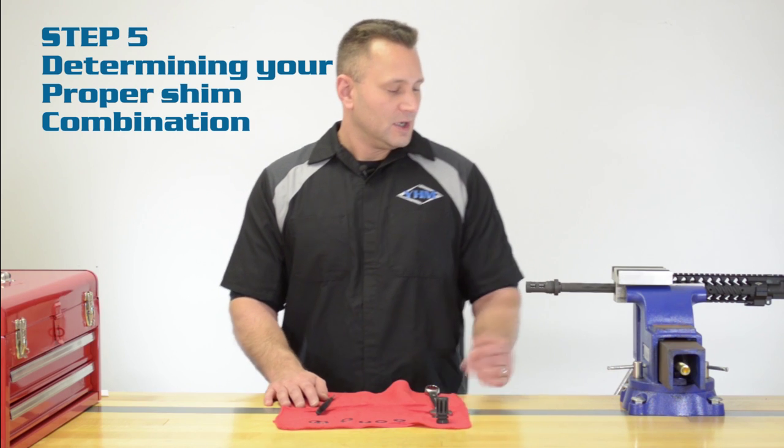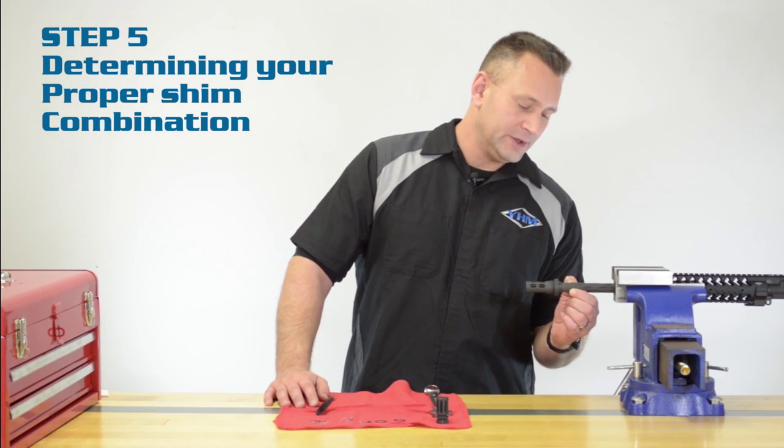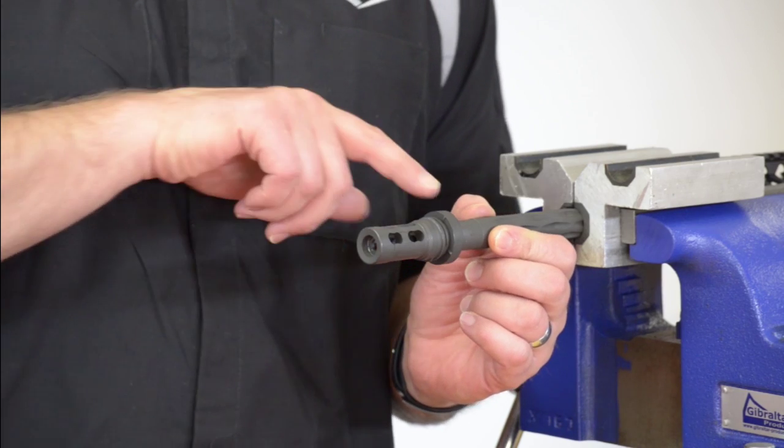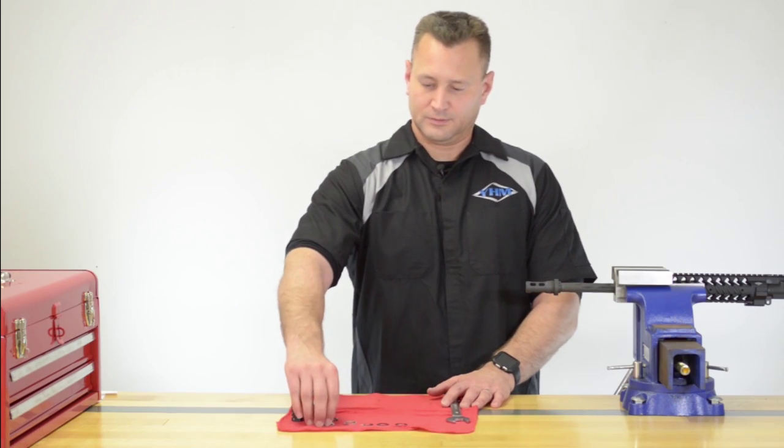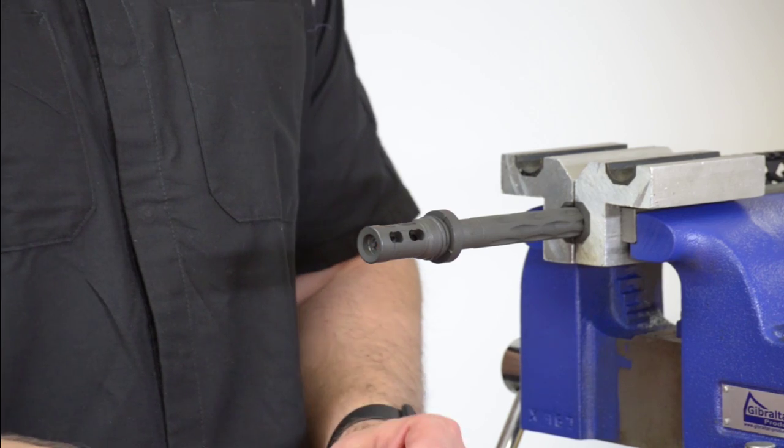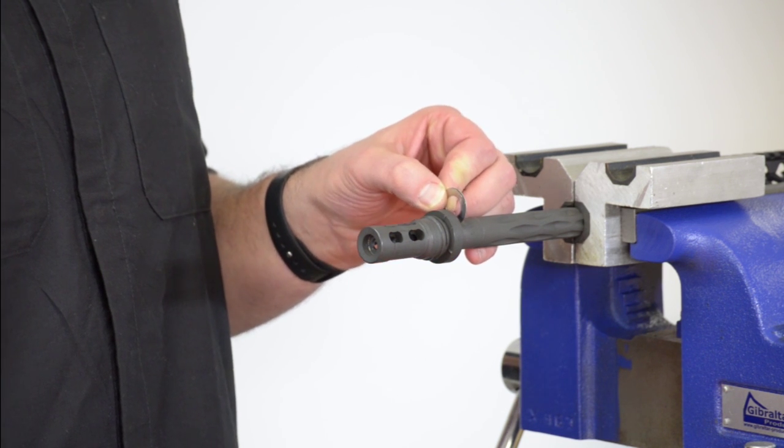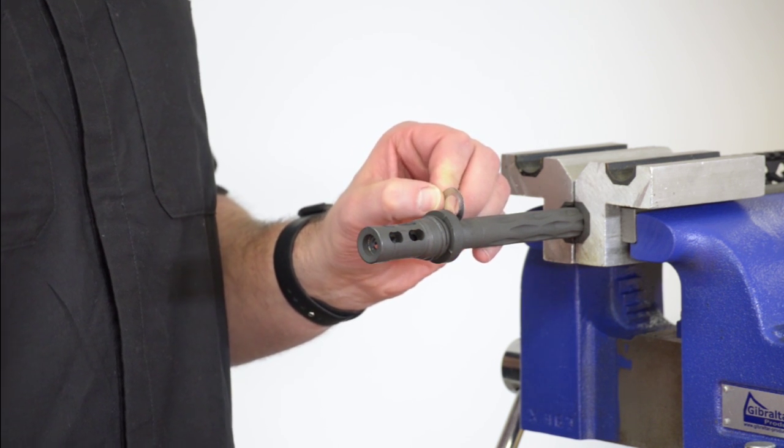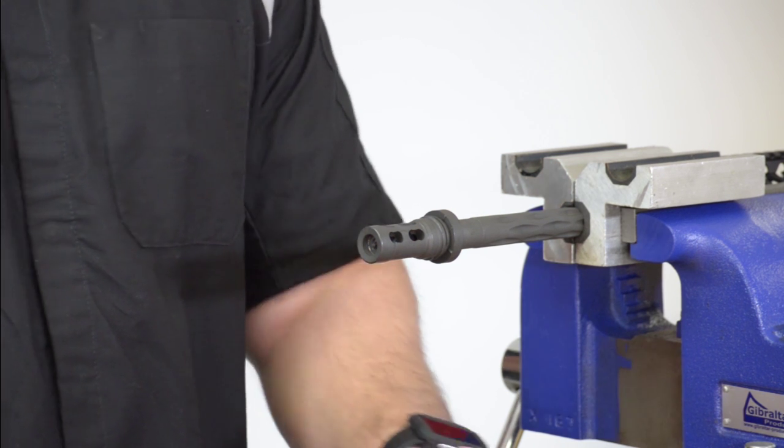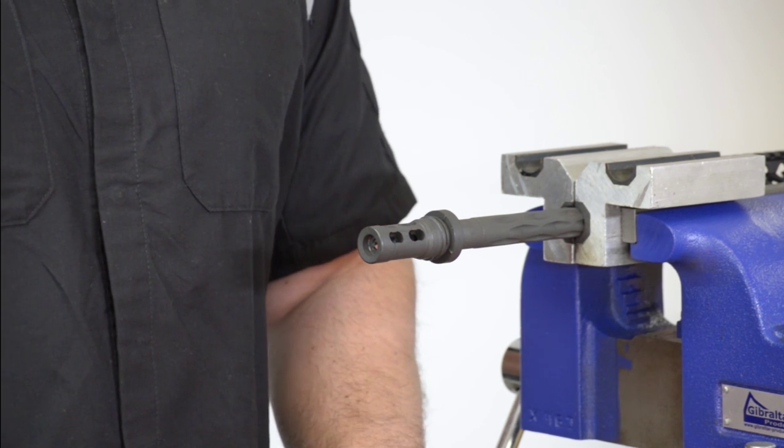Step five, take a look at the gap between the muzzle brake and the shoulder of the barrel. We'll use this as a guide for selecting which shims to install. The shims included in the kit come in varying thicknesses. Try to start with the thickest shims first to use as few shims as possible.